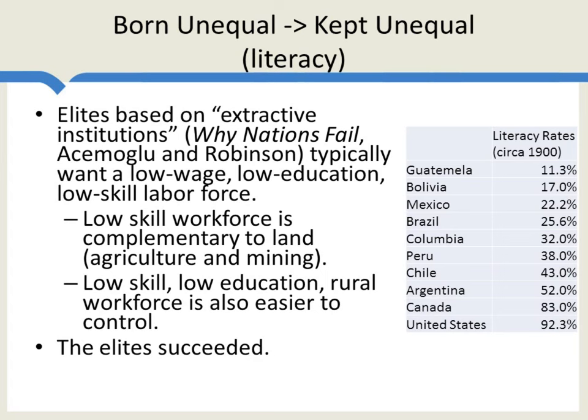A low-skilled, low-education rural workforce is also easier to control. You can see that the elites in Central and South America succeeded at this. Here are literacy rates as late as 1900: in Guatemala, 11%; Bolivia, 17%; Mexico, 22%; Brazil, 25%. This compares with Canada and the United States, where 80% to 90% of the population was literate in 1900. The differences were not accidental — they were flowing from the nature of extractive institutions and from the incentives of these land-owning elite groups to keep their rural workforce low-educated.